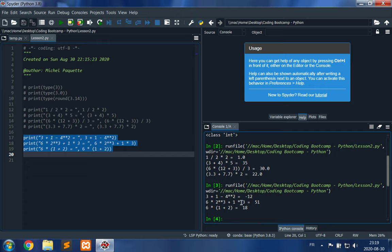Parentheses have the highest priority, so (1 + 2) = 3 × 6 = 18.